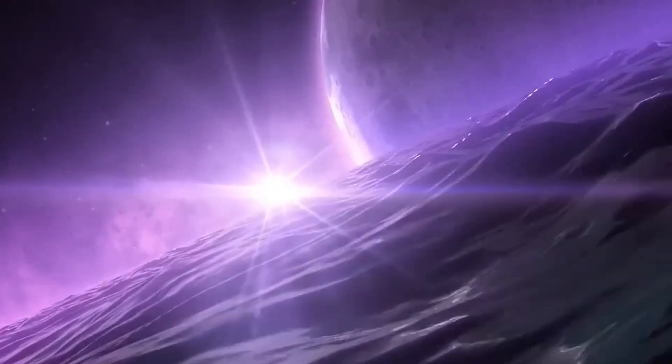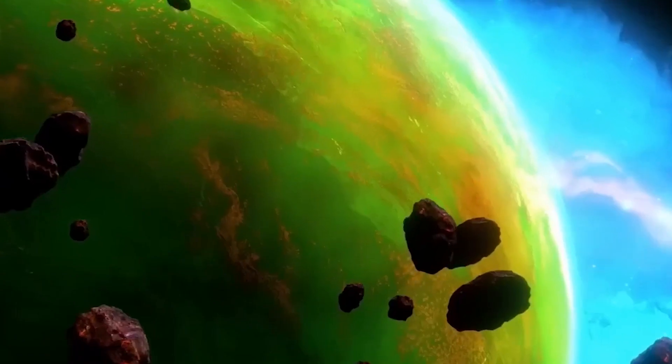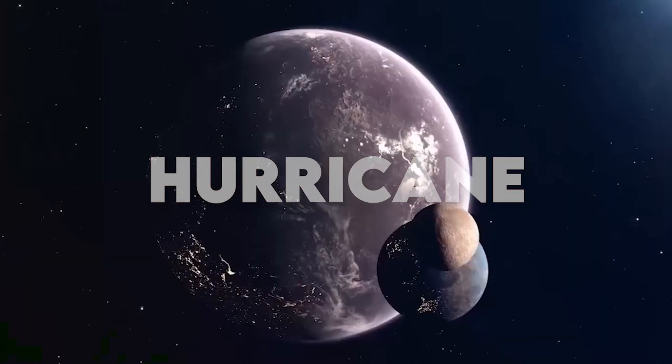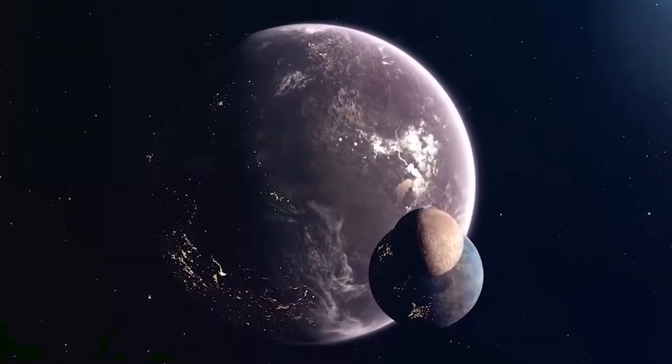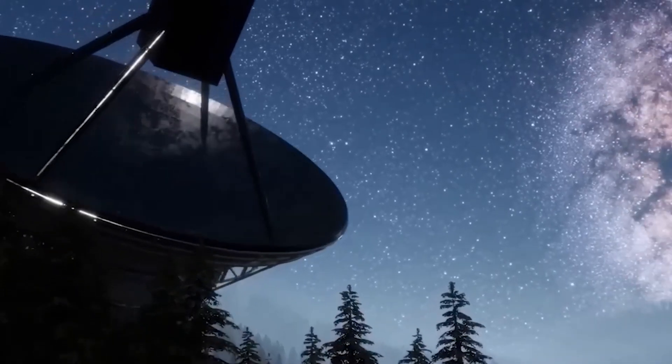A tidally locked planet's side-facing light has a region that reaches boiling point and continuously produces a hurricane, which is an intriguing feature. As a result, it appears that there is a small area on the planet where life, if it is feasible, may exist.